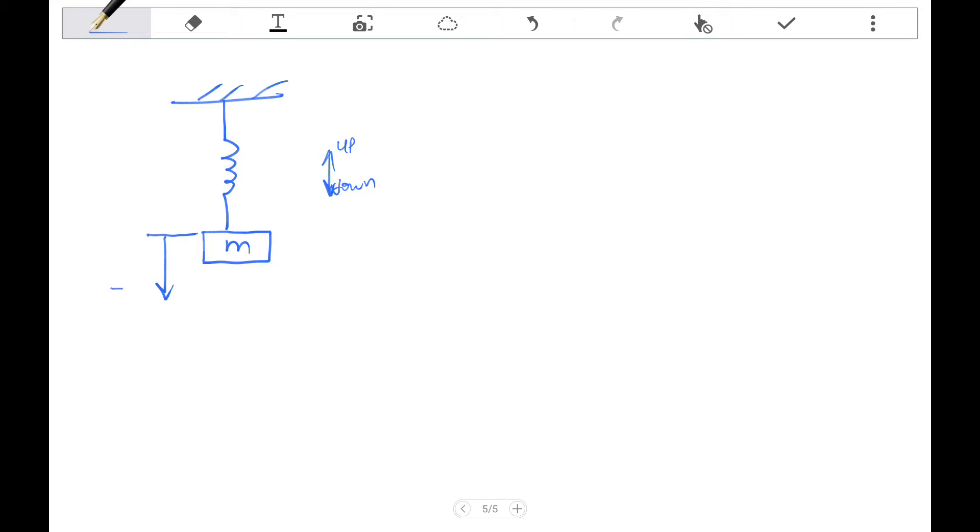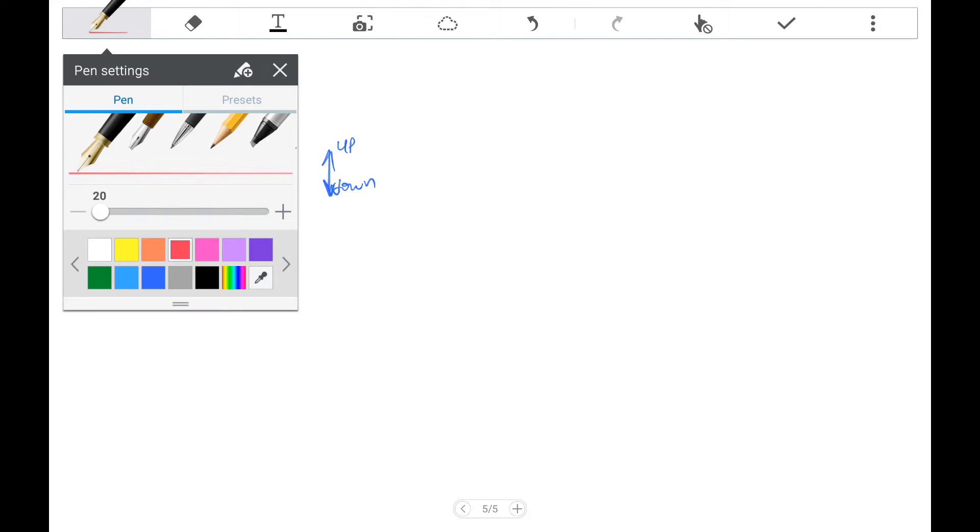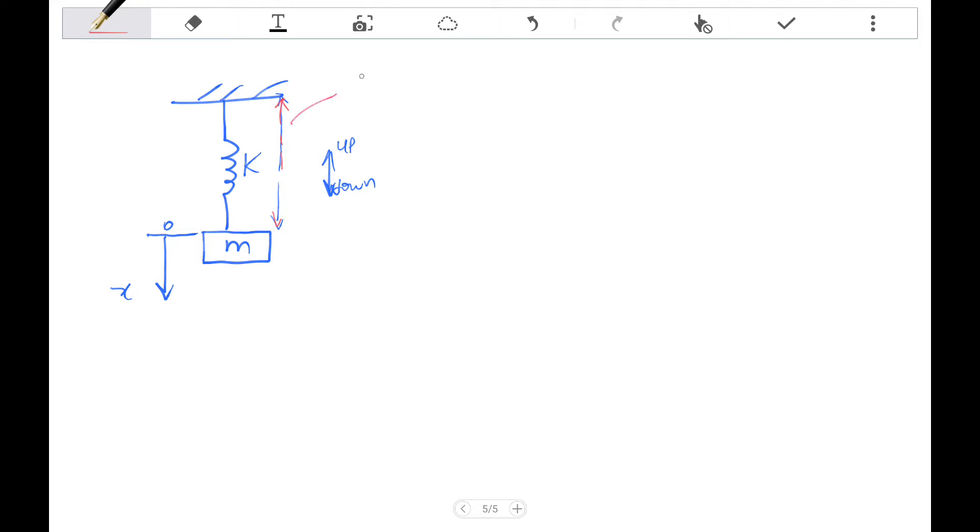So how do we analyze this type of system for the equation of motion? What is this length here? This length here is basically the stretched length. We've talked about this in a previous video. The reason why this is called the stretched length is because the weight of the mass is pulling down and it balances out the force with the spring.